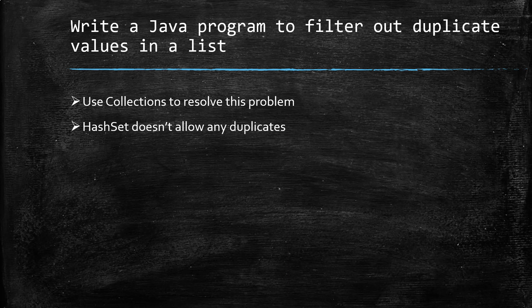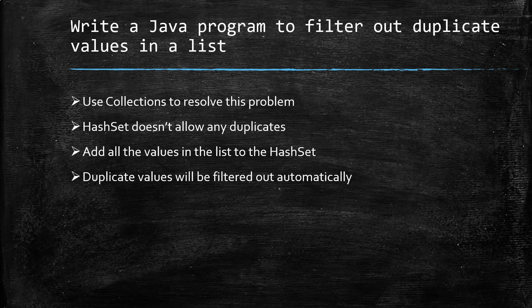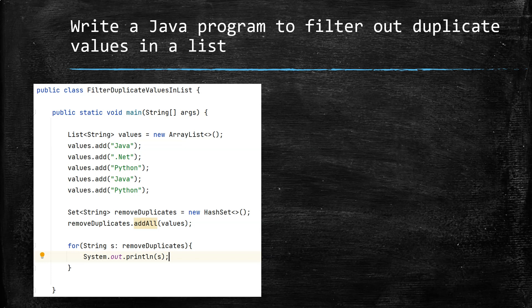Even if you try to insert duplicate elements into a HashSet, it will not allow them. So the approach is to add all values from the list into a HashSet, and it will automatically filter out all duplicates. In interviews, don't worry too much about syntax — explain the logic and the basic algorithm. That is what interviewers care about.